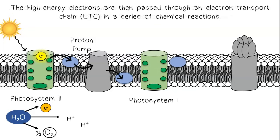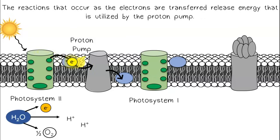The high-energy electrons are then passed through an electron transport chain, or ETC, in a series of chemical reactions. The reactions that occur as the electrons are transferred release energy that is utilized by the proton pump.